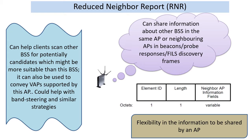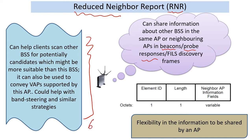One of them is Reduced Neighbor Report, RNR, which can be piggybacked in a variety of frames from the AP side. These are helpful for discovery. These are not new, but in the 6 gigahertz context they might be enforced and could be very helpful for discovering 6 gigahertz networks. Remember, one of the inefficiencies in current wireless LAN operation can be the enormous number of probe requests and the consequent wastage of airtime.